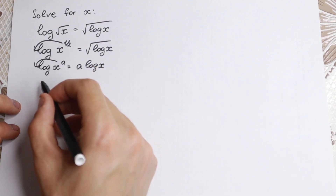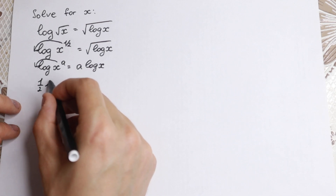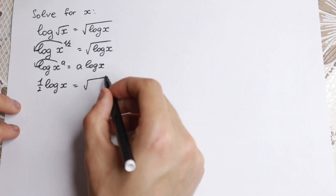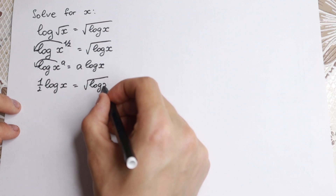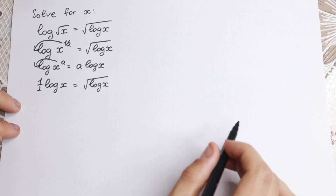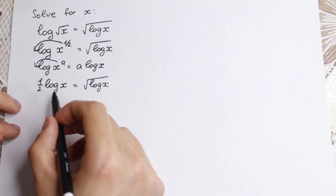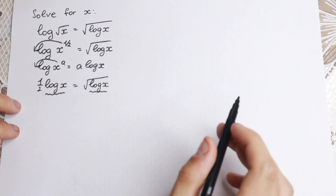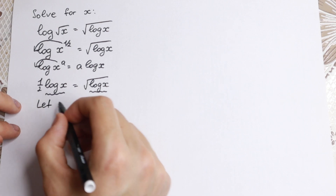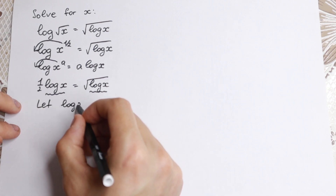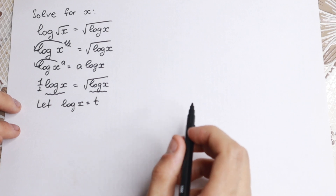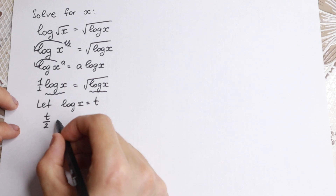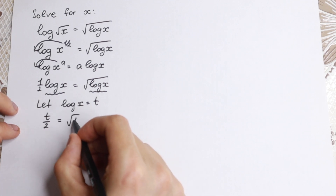Using this property, we will have one-half logarithm x equal to square root of logarithm x. If we look closely, we have two completely the same values — logarithm x on both sides — so we can easily use a substitution. Let logarithm x equal to t.